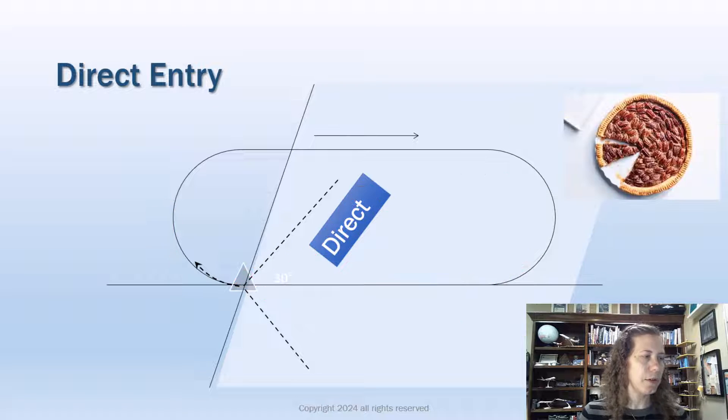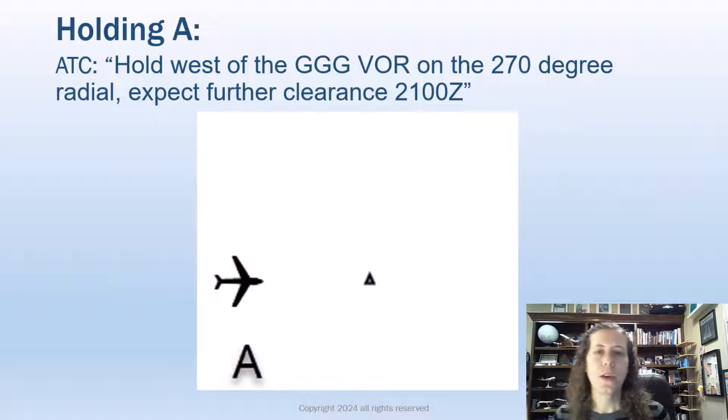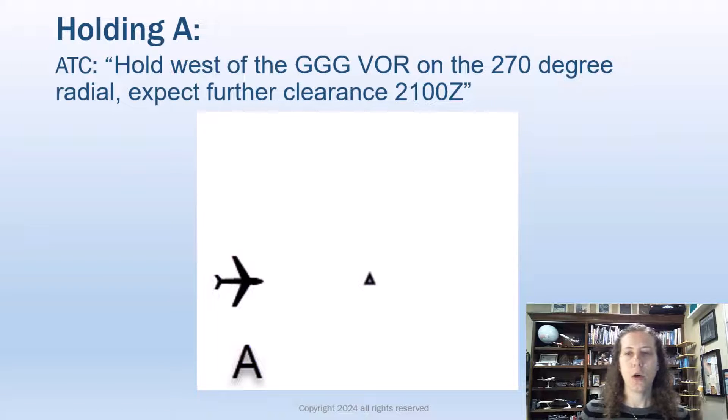All right, now I promised I would show you how to figure out our holding pattern entry. So we'll do some practice drawing and then we'll do a little help for figuring out how to enter the holding pattern. Okay, first holding pattern clearance: hold west of the Gregg County VOR on the 270-degree radial, expect further clearance—they gave us a time. So good job for them. So how do I draw it? Let's practice.